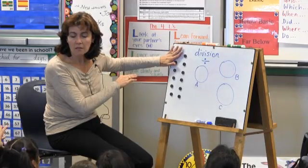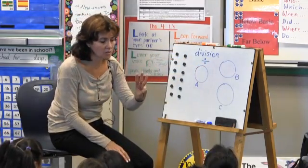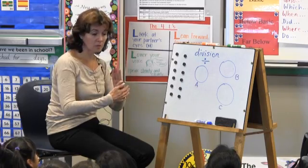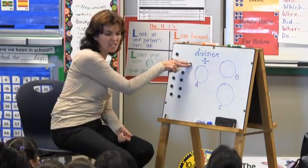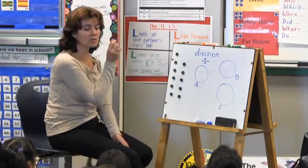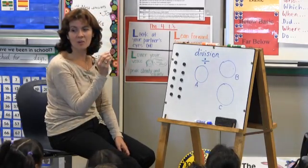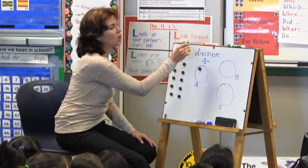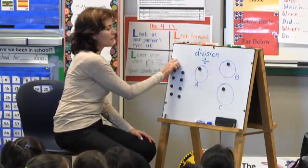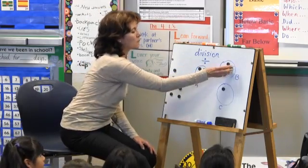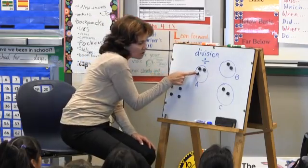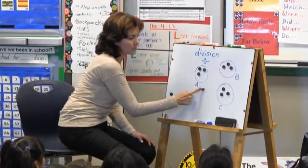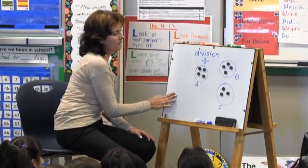Those are the cars that need to go into the garages. If you can draw this on paper, you can start counting. But since we can move these cars, let's do it like this. Say it with me: this one goes in garage A, this one goes in garage B, this one goes in garage C. This one goes in garage A, this one goes in garage B, this one goes in garage C. This one goes in garage A, this one goes to garage B, this one goes to garage C. This one goes to garage A, this one goes to garage B, this one goes to garage C.